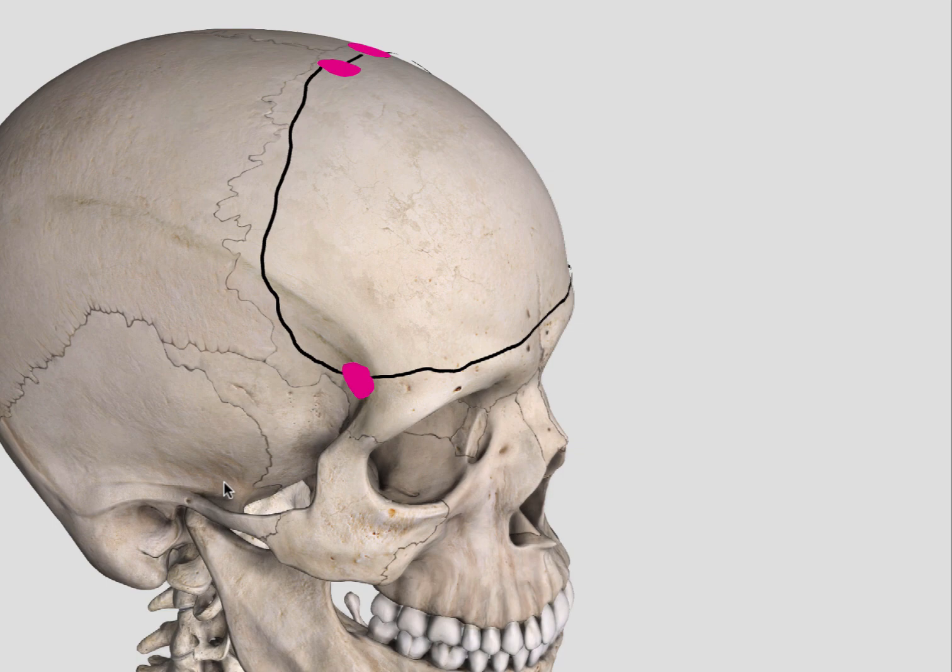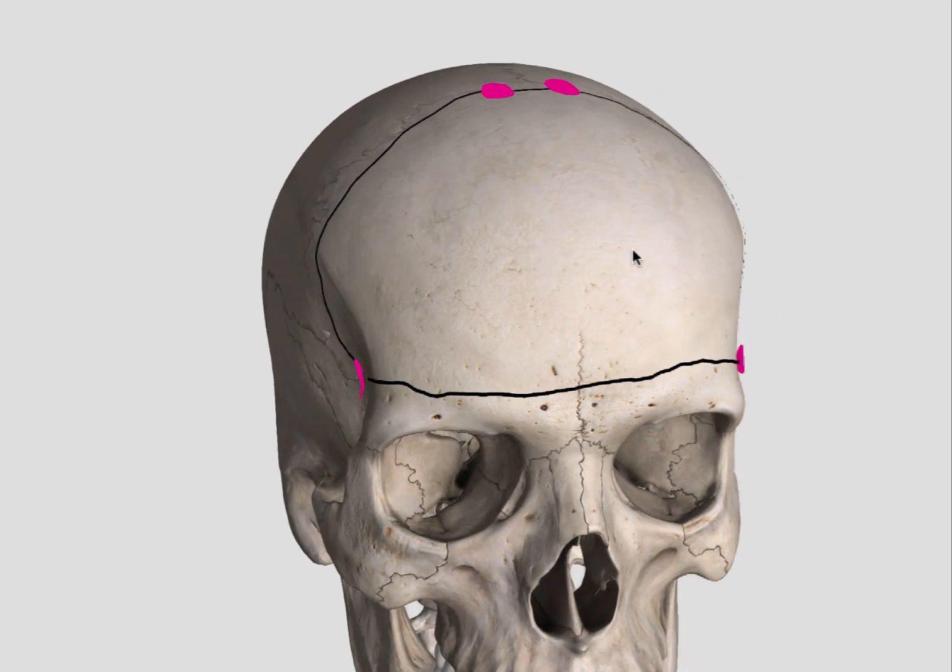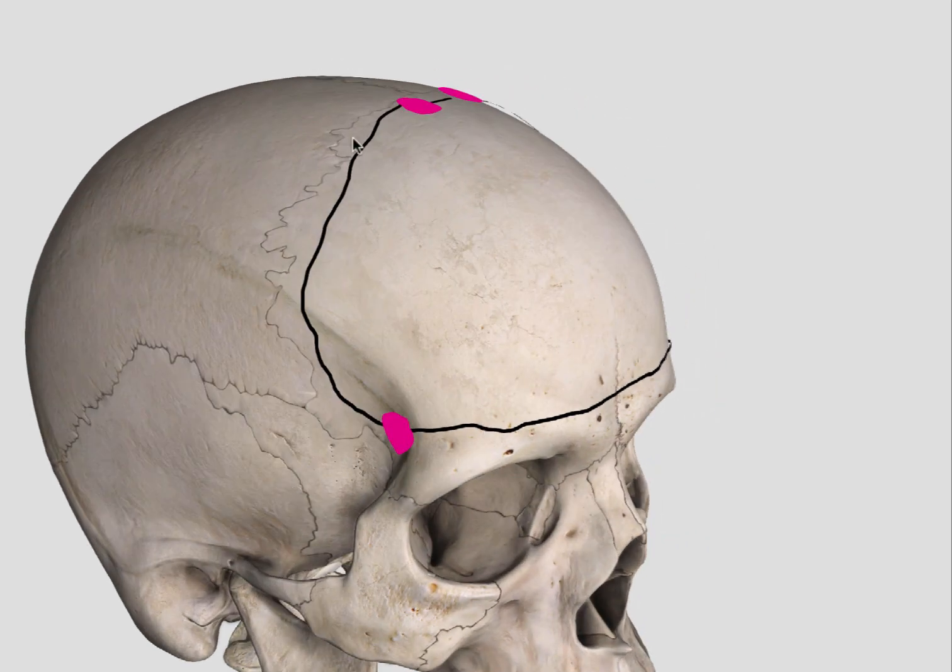Usually you are fine just doing bifrontal decompressive craniotomy for head injury, but if there are temporal contusions as well, then you can make a bifrontal temporal craniotomy. This decompresses the temporal fossa and relieves pressure of the swollen temporal lobes on the midbrain.